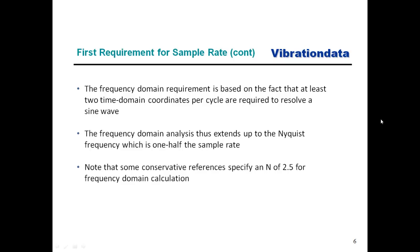The frequency domain requirement is based on the fact that at least two time domain coordinates per cycle are required to resolve a sine wave. The frequency domain analysis thus extends up to the Nyquist frequency, which is one-half the sample rate. More conservative references say the n value for frequency domain should be 2.5 or even 3.33.